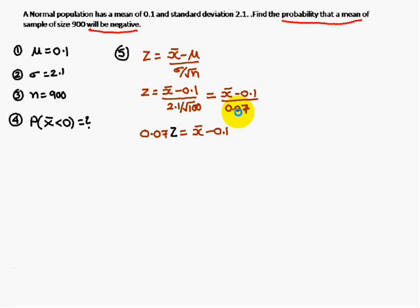If you do the cross multiplication, 0.07 times z equals x̄ minus 0.1. That means x̄ is equal to 0.07 times z plus 0.1.